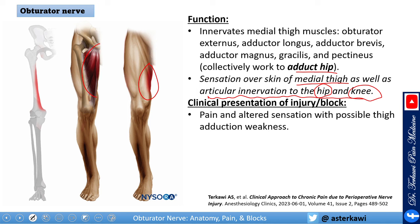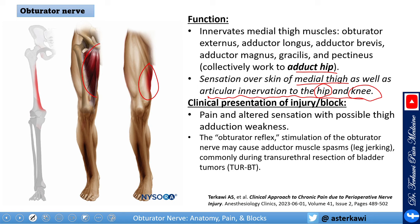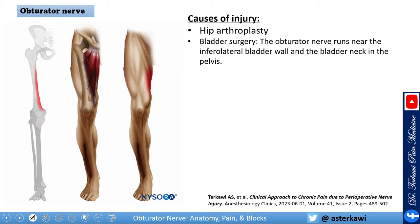Another important consideration, especially in anesthesia during transurethral resection of bladder tumor, is the obturator reflex — stimulation of the obturator nerve during bladder surgery can cause leg jerking due to adductor muscle spasm. Injury to the obturator nerve usually occurs with hip surgery, hip arthroplasty, or bladder surgery, because the obturator nerve runs near the inferolateral bladder wall and the bladder neck, so it can be injured in the pelvis.